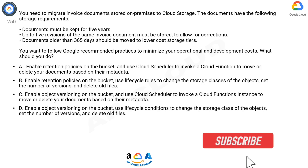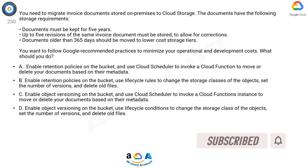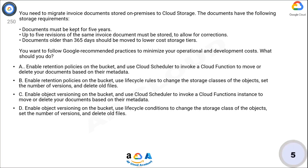What should you do? A: Enable retention policies on the bucket and use Cloud Scheduler to invoke a Cloud Function to move or delete your documents based on their metadata. B: Enable retention policies on the bucket, use lifecycle rules to change the storage classes of the objects, set the number of versions, and delete old files. C: Enable object versioning on the bucket and use Cloud Scheduler to invoke a Cloud Functions instance to move or delete your documents based on their metadata. D: Enable object versioning on the bucket, use lifecycle conditions to change the storage class of the objects, set the number of versions, and delete old files.